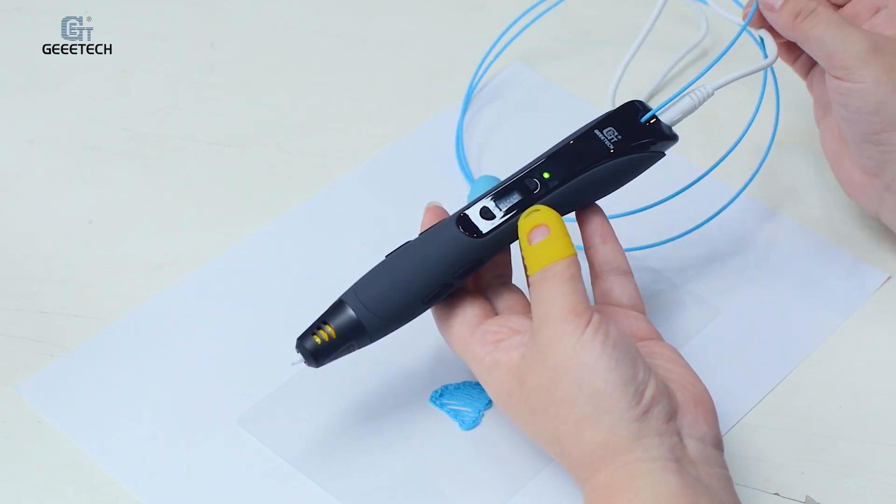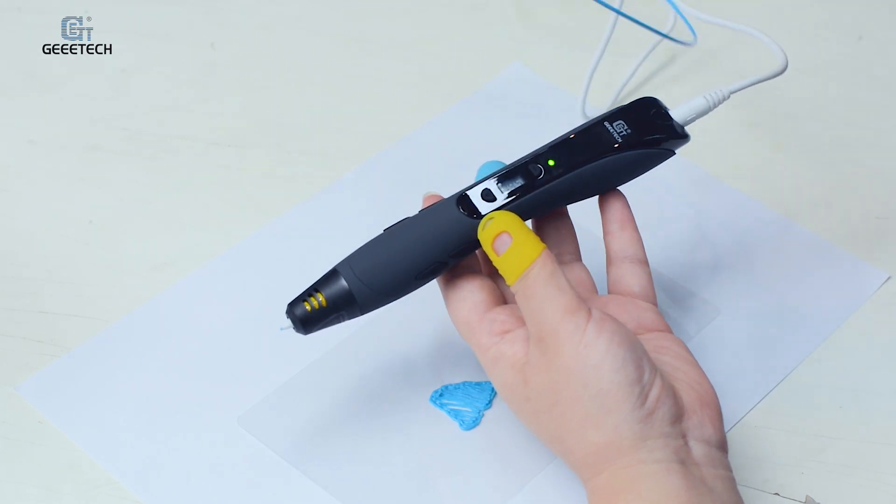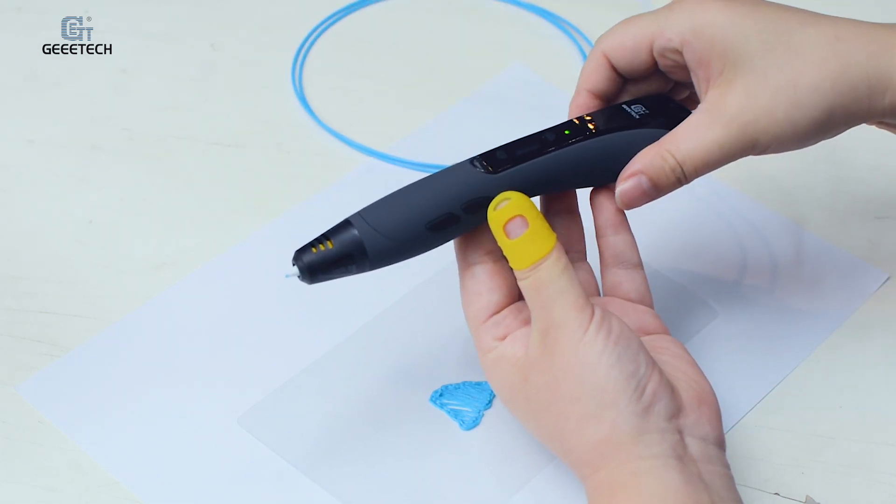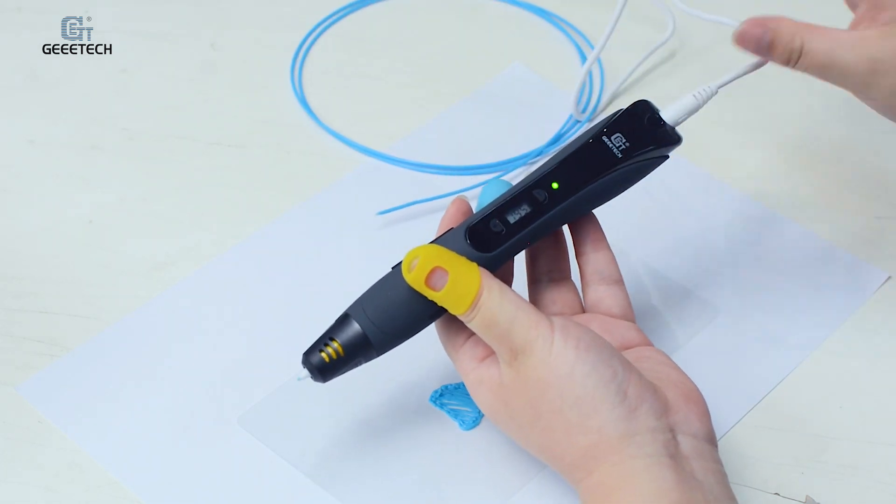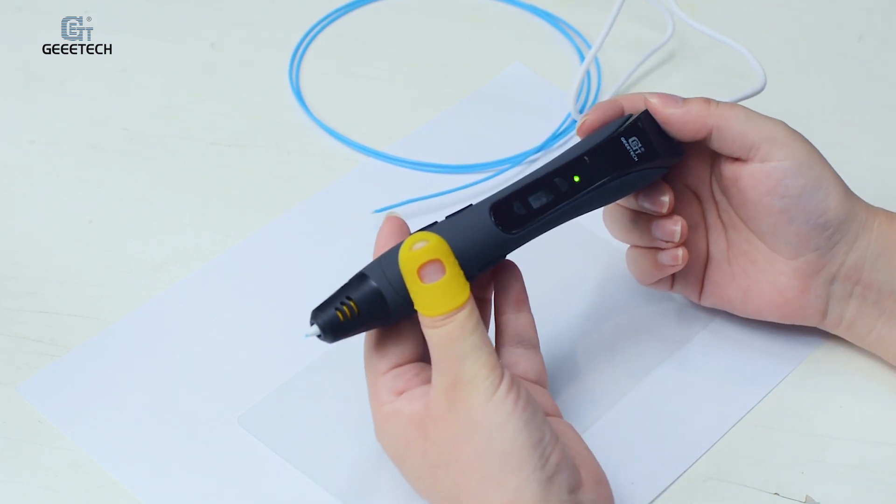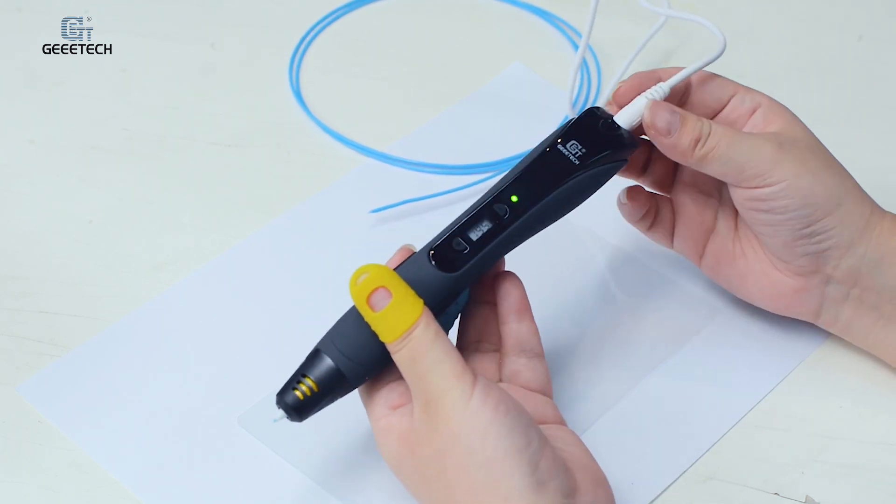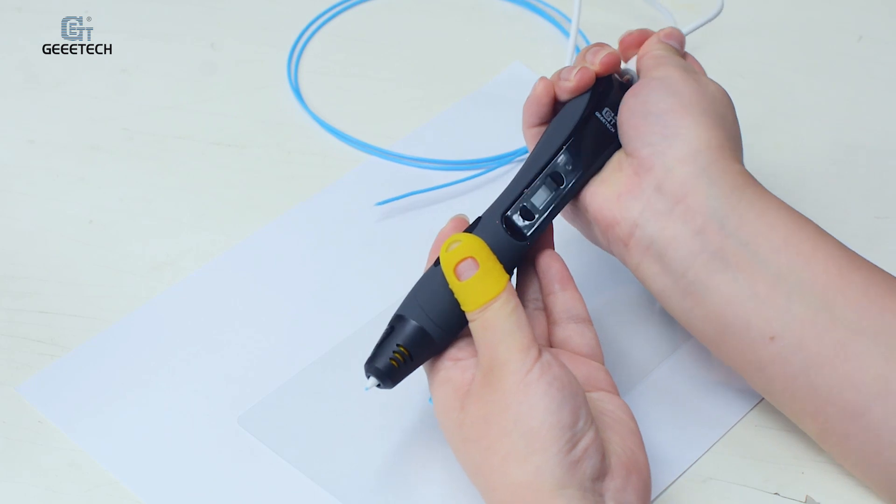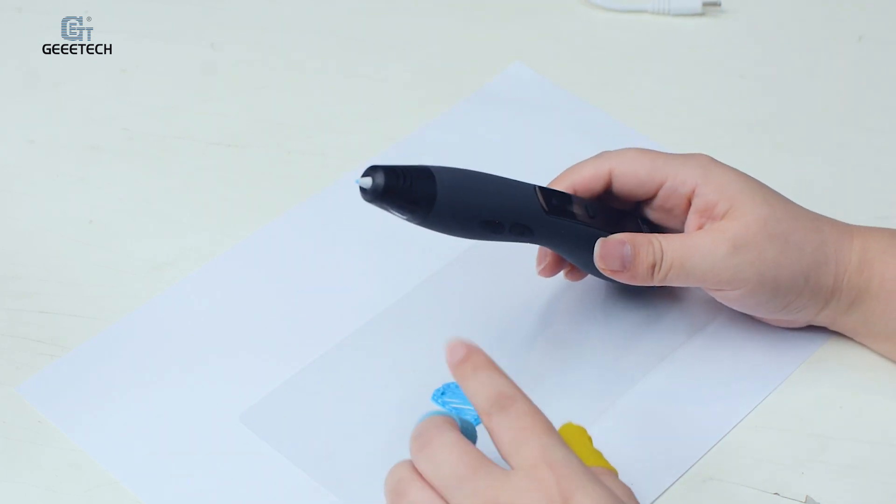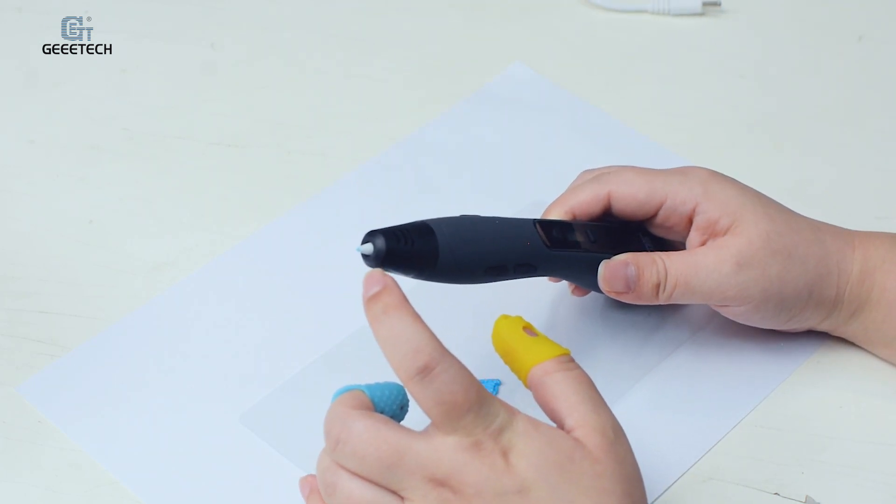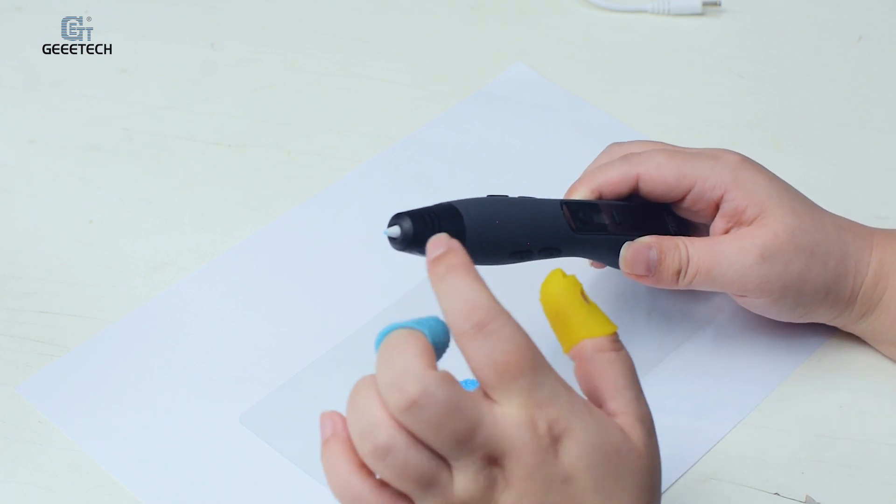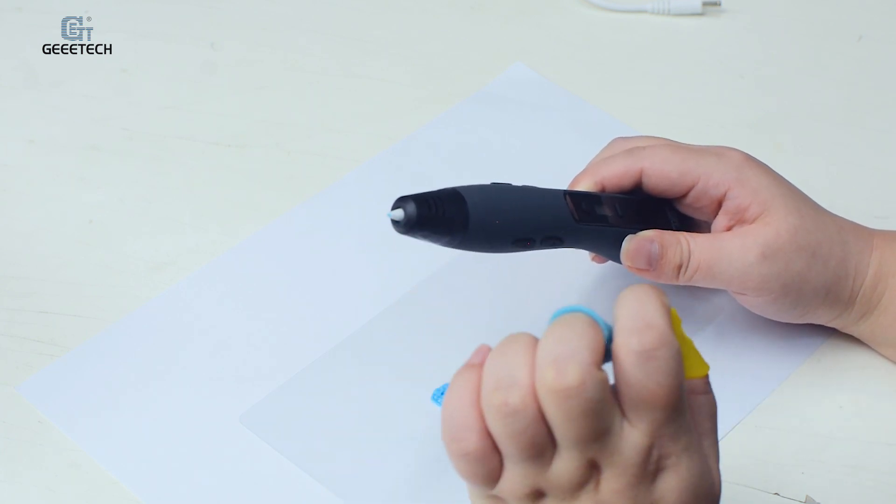Unload the filament and load a new one. Press this button to stop. Okay, after finishing printing, power off the 3D printing pen. Now the nozzle temperature is very high. Do not touch it. Do not touch the nozzle.